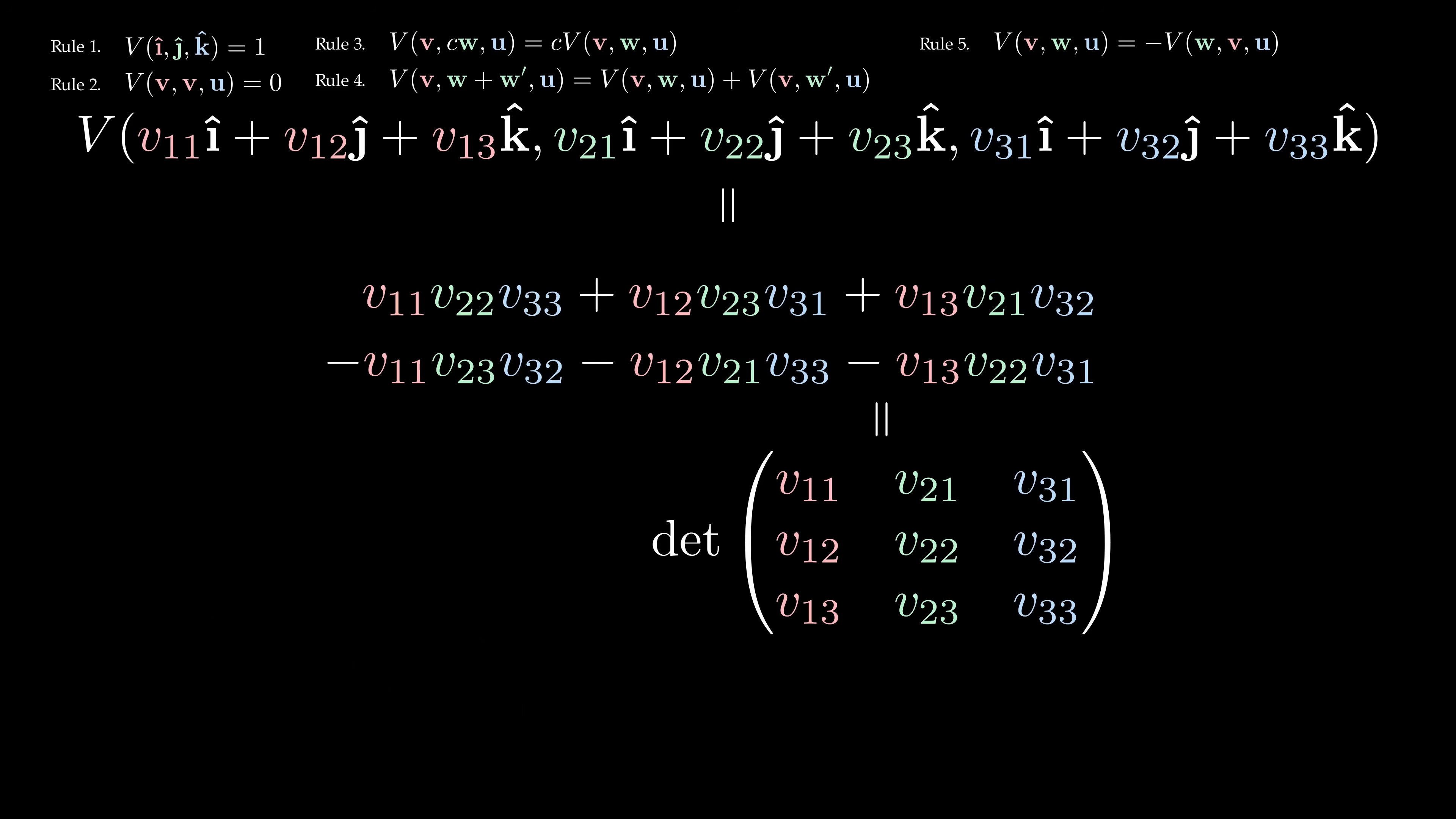Now these terms look like a mess, but there are some patterns to be found. The first subscripts always run from 1 to 3 in order, whereas the second subscripts always form some rearrangement or permutation of 1 to 3.